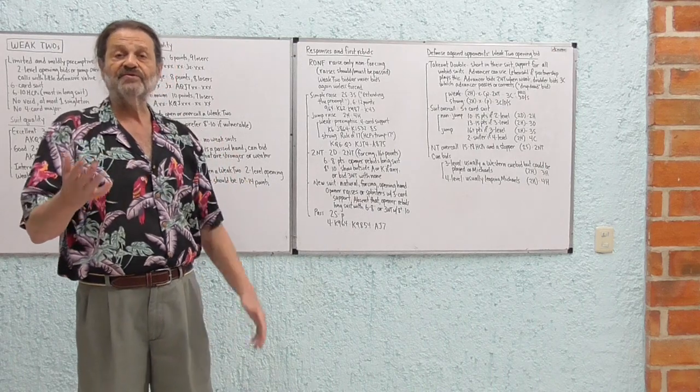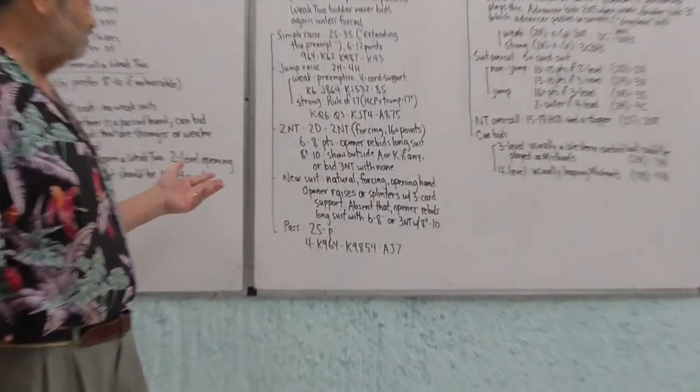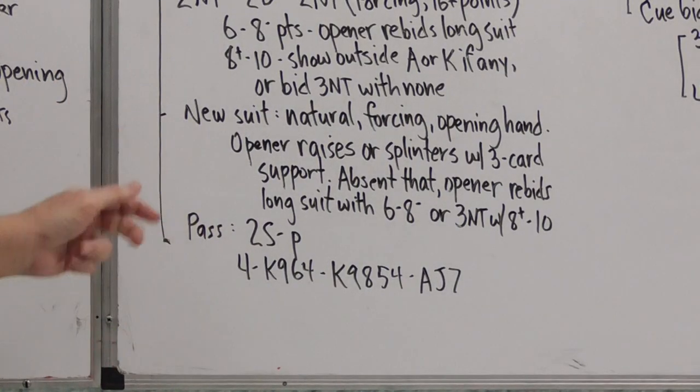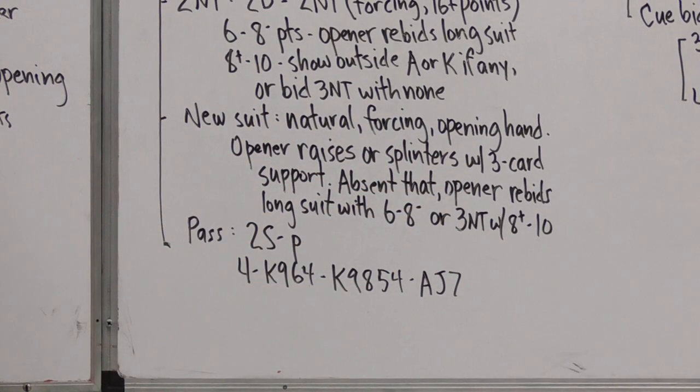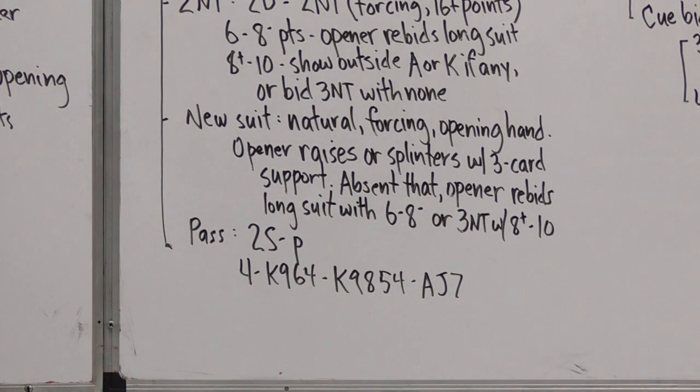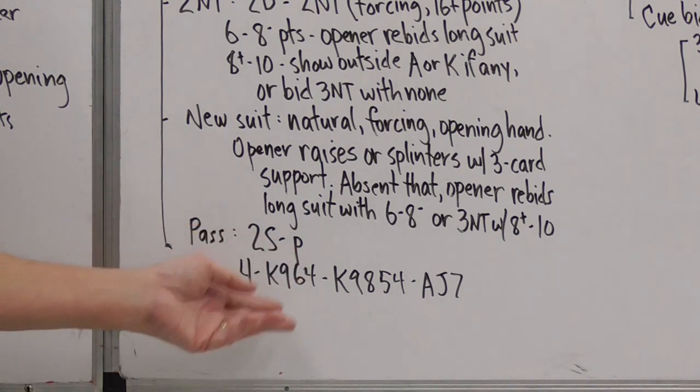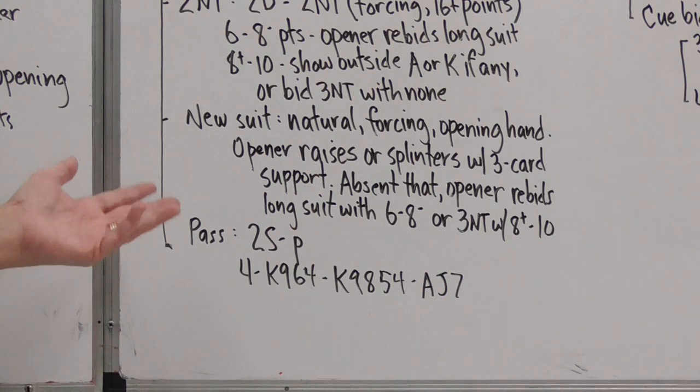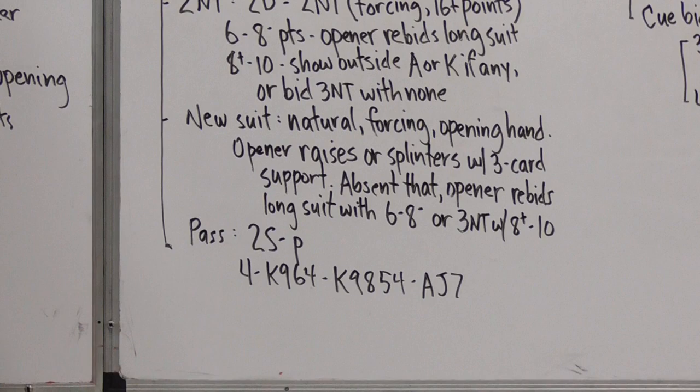Without that side suit shortness, I would just simply raise your suit. It would go two hearts, two spades, three spades. But that's showing support. Absent that, if you can't do that, opener rebids his or her long suit with a minimum or three no trump for the maximum. And then finally, pass is always an option. Partner opens two spades and you've got this hand. There's no point in bidding three diamonds now. There's not really much hope of game and it's very unlikely you're in a better place than two spades. So just go ahead and pass this bid.